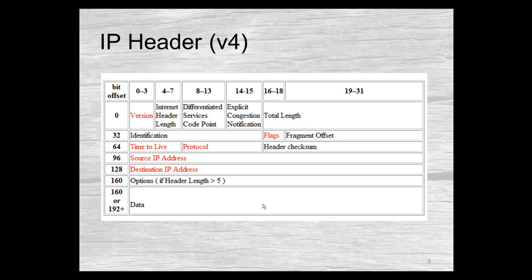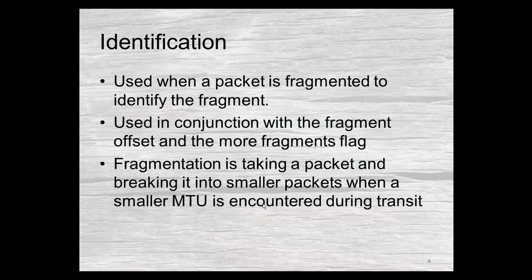We'll move our way through and specifically the most important areas: time to live and the addresses. The identification field is used when a packet is fragmented. Most packets you don't fragment or break into smaller chunks, but if you're fragmenting a packet then you'll use this identification field. Fragmentation is when a router receives a packet and the network it has to forward it to requires a smaller packet, so it has to break that larger packet into smaller ones for that next transit.